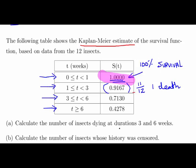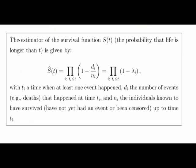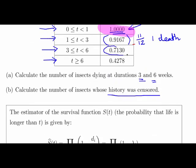We need to calculate the number of insects dying at durations three and six, and calculate the number of insects whose history has been censored. Keep in mind that censoring could happen at any time throughout the six weeks. The Kaplan-Meier estimator of the survival function S(t) — the probability that life is longer than t — incorporates all the numbers that precede it, which is why it accounts for what's the probability of life being longer than six weeks.